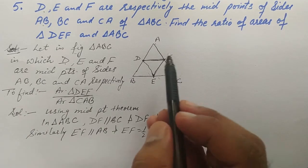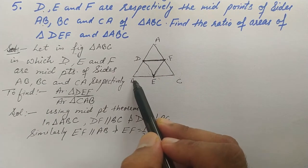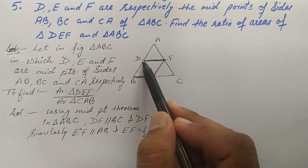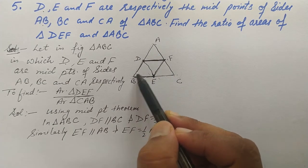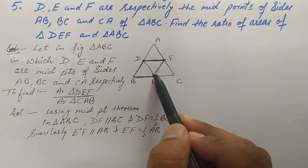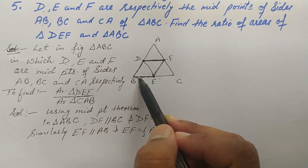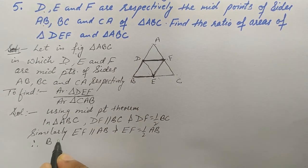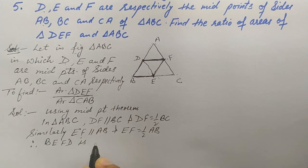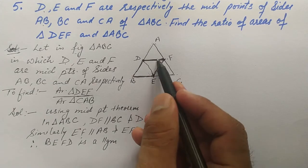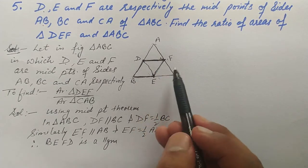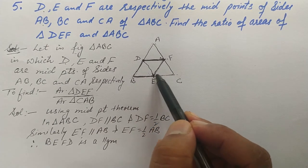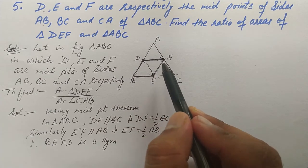Since DF is parallel to BC, DF is also parallel to BE. And since EF is parallel to AB, EF is parallel to BD as well. Both pairs of opposite sides are parallel, so BEFD is a parallelogram. Therefore, BEFD is a parallelogram because BE is parallel to DF by the Midpoint Theorem and EF is parallel to BD by the Midpoint Theorem.